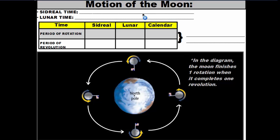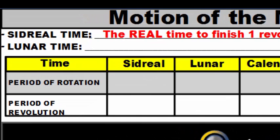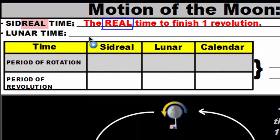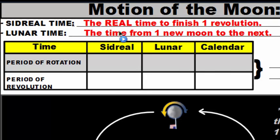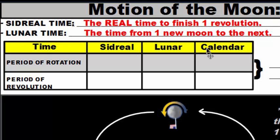First, we have what's called sidereal time — the real time it takes the moon to finish one revolution, the actual number of days. You can remember it by the word 'real' within 'sidereal.' Then there's lunar time, which is the time it takes to go from one new moon to the next in the lunar cycle — 'luna' means moon, so think new moon to new moon. There's also a third one called calendar time, which we'll get to shortly.